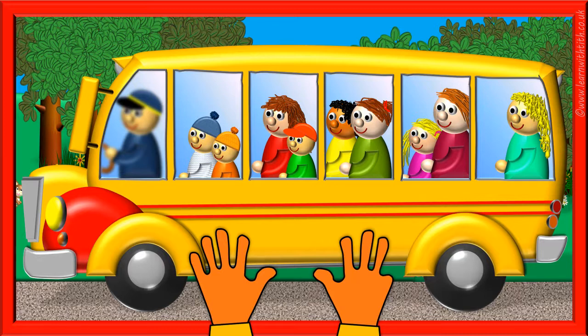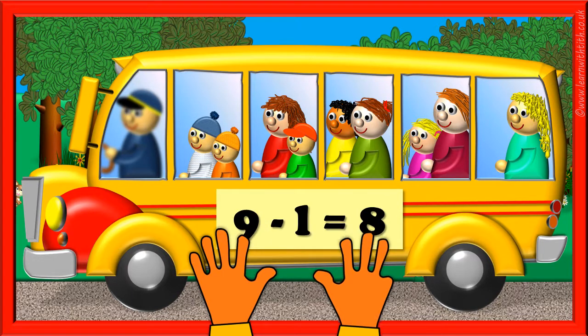One passenger decides to get off the bus. How many passengers will that leave on the bus? We want to find out what one less than 9 is and we can write it like this: 9 take away 1 equals 8. There will be 8 passengers left on the bus. 1 less than 9 is 8.